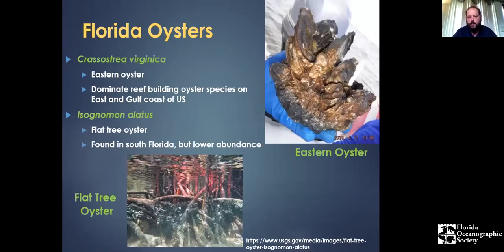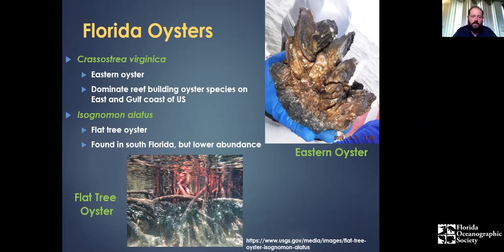Our main reef-building species locally is Crassostrea virginica, the Eastern oyster, found throughout the East Coast and Gulf Coast of the U.S. There is another species, the flat tree oyster, that occurs in South Florida, but it's much lower abundance, typically grows on mangrove prop roots, and doesn't create the large reefs we see from the Eastern oyster. So I'll focus on the Eastern oyster.